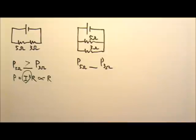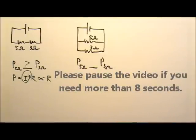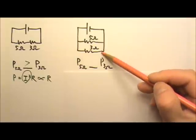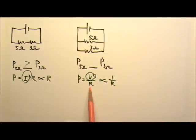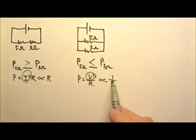What about this one? They are in parallel, they get the same voltage. So this equation is the most convenient. The power is proportional to 1 over R because V squared is the same. So the three ohms, the one with the smaller resistance, consumes more power.